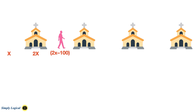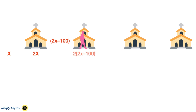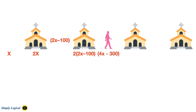In the second church, as soon as he enters, his money is doubled. 2x minus $100 is the money left before visiting the second church, so it doubles. On his way out, he donates another $100. And he is left with 4x minus $300.